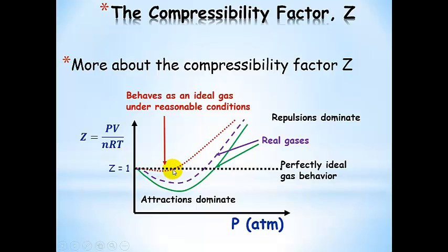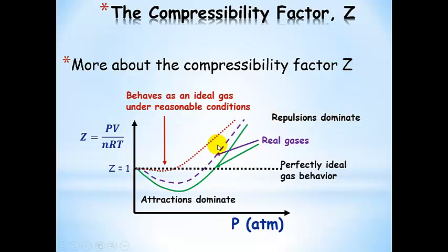Even ideal gases, if we keep on increasing the pressure far enough, will have repulsions start to dominate. When Z is larger than 1, repulsions are dominating — in other words, the molecules really are taking up space, which we already knew, but this just demonstrates it.